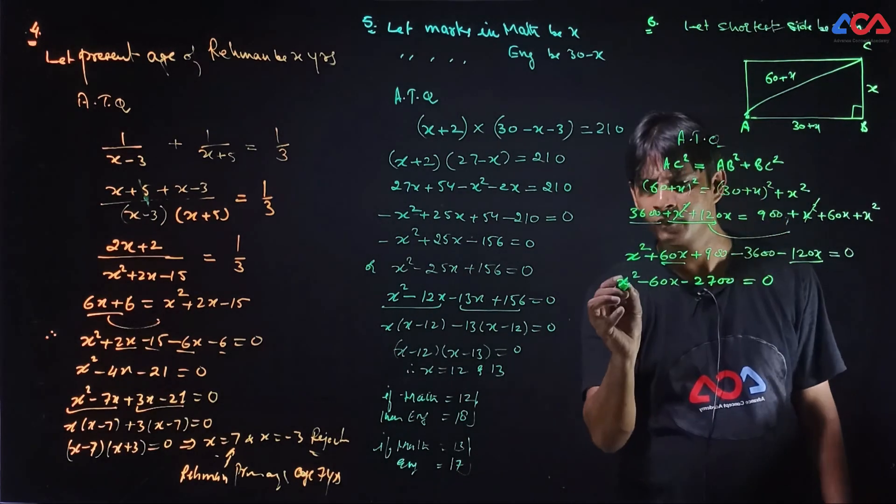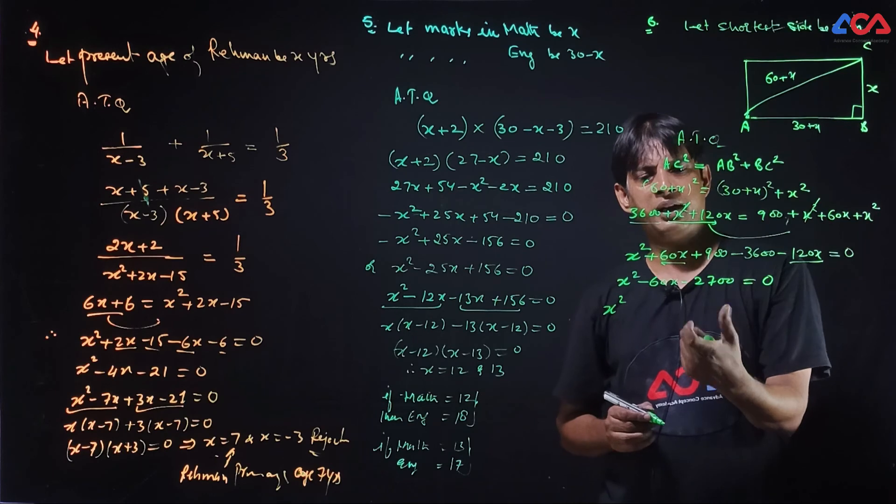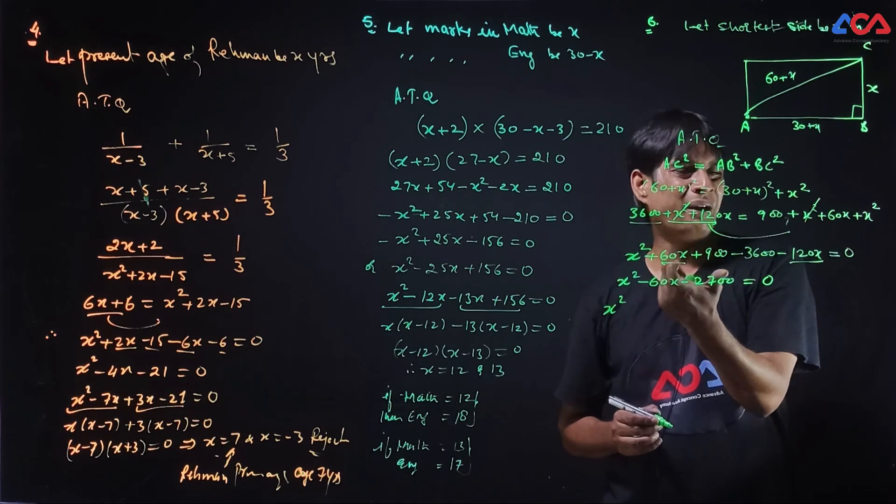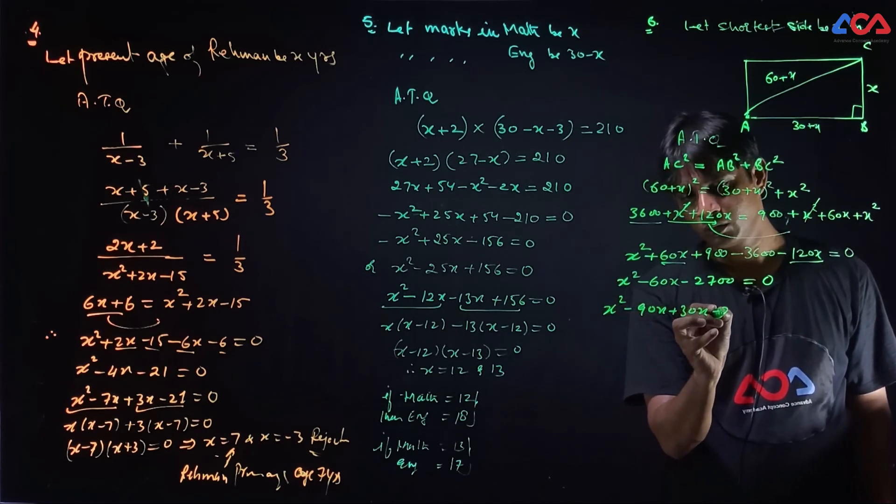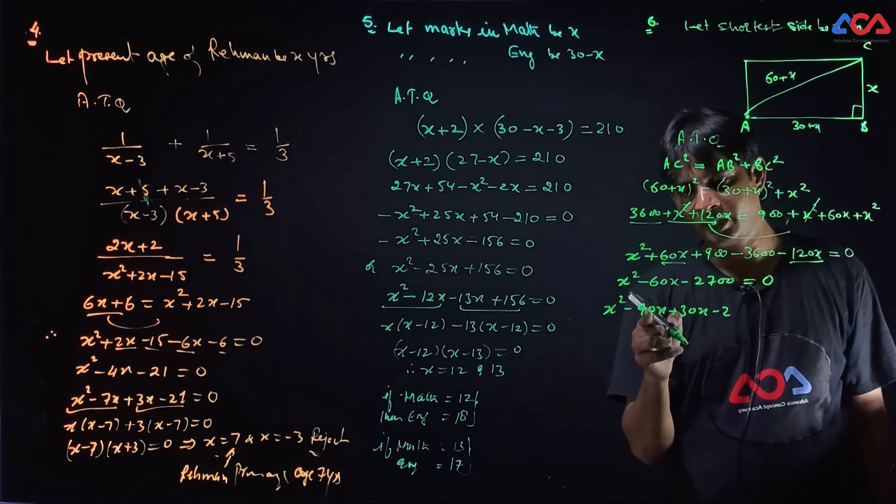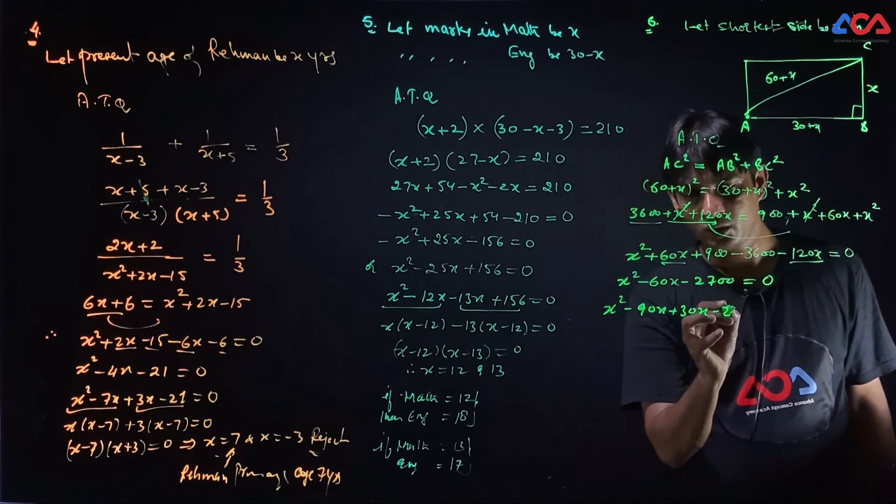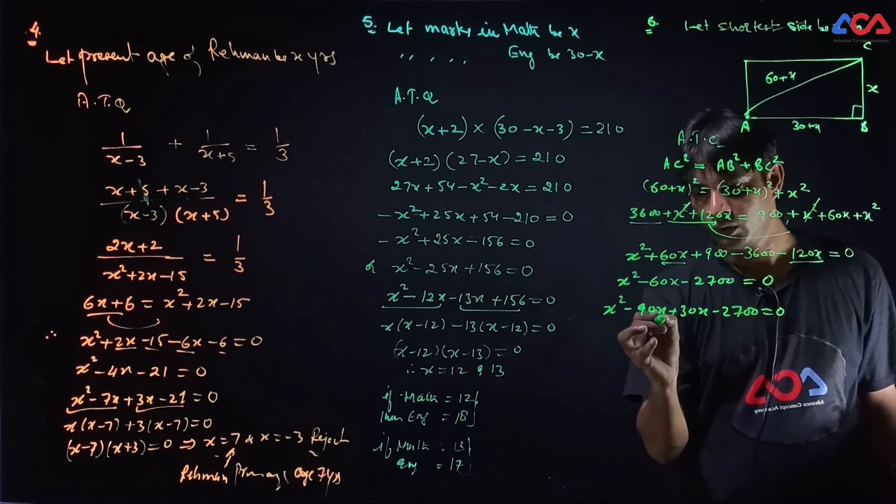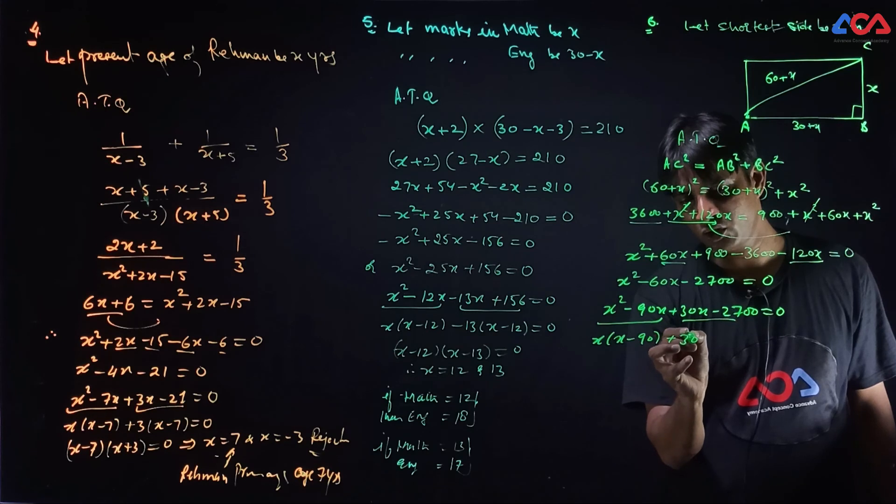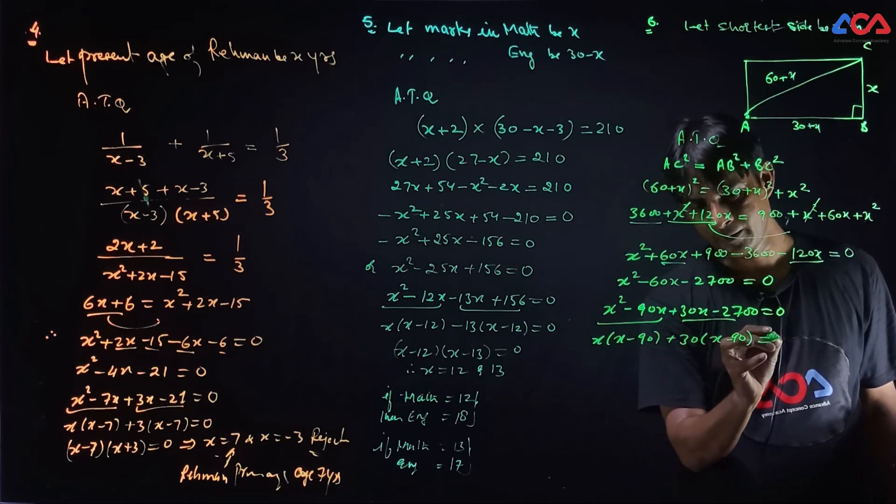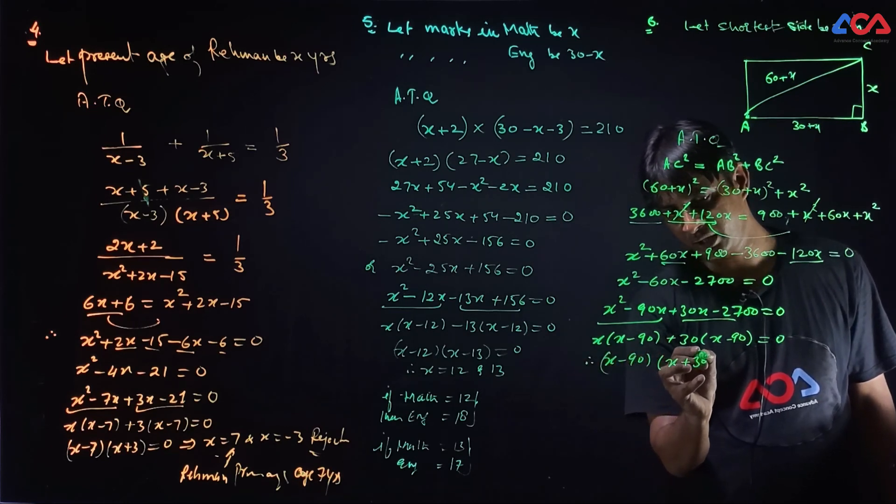Now we can easily factorize. x square, we will factorize by making pairs. 2700 pair that multiply and add to minus 60. Therefore minus 90x plus 30x. 90 and 97, 30 into 90, 2700. And if we add this then minus 60. 2700. First two parts x common, x minus 90. Next two parts 30 common, x minus 90. Therefore x minus 90 whole expression common, x plus 30 which is equal to zero.